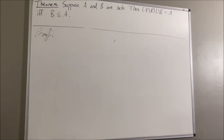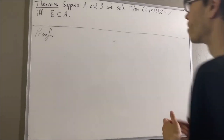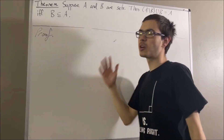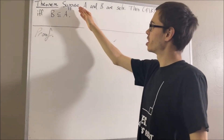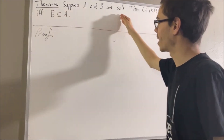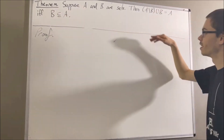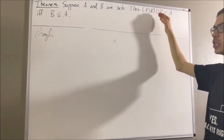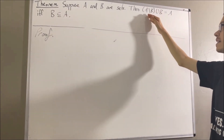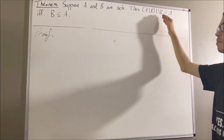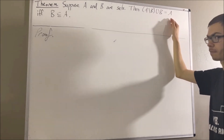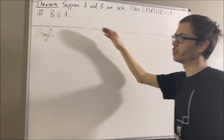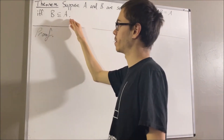Hello! In this video, we are going to prove the following theorem. Suppose A and B are sets. Then the union of A set minus B and B is equal to A, if and only if B is a subset of A.